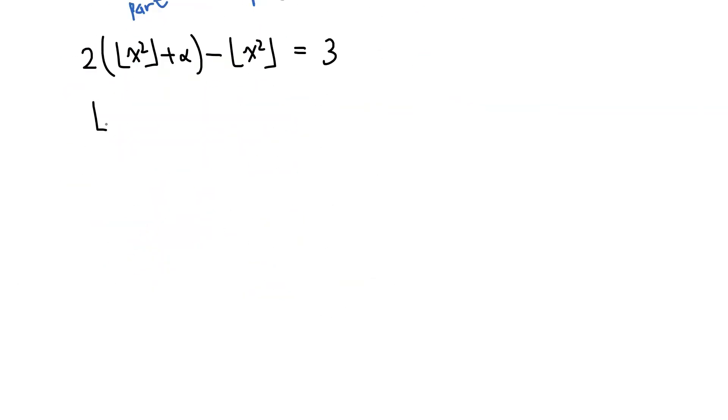And therefore, floor x squared plus 2 alpha equals 3. So the equation became a 2-variable equation with floor x squared and alpha.